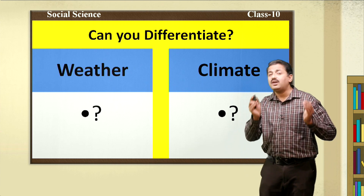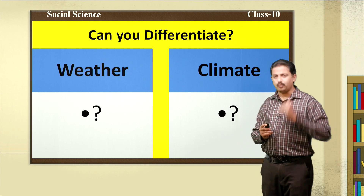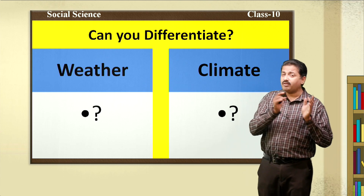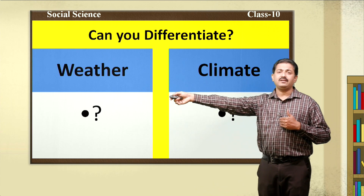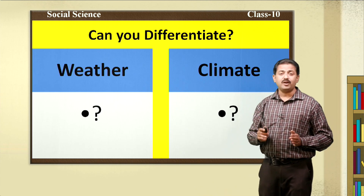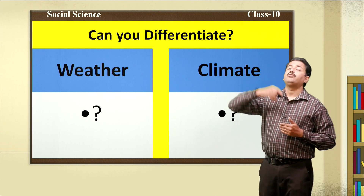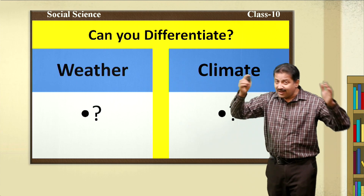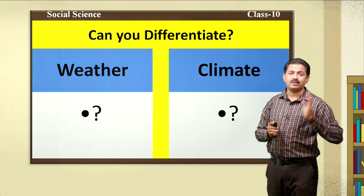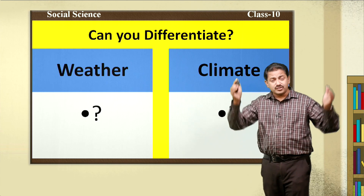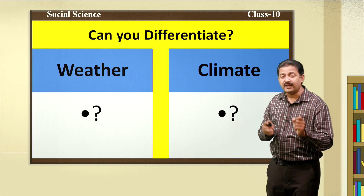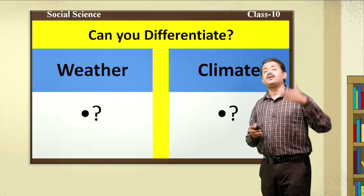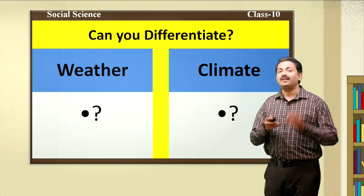Weather refers to short-term changes in temperature, rainfall and humidity. It changes from place to place. For example, in Bengaluru, the weather condition of one area may differ from a nearby area in the same place. But climate is not like that. Climate is an average weather condition of a vast area considered over 35 to 40 years. The average weather condition of a large area over 35 to 40 years is calculated and they name which type of climate it is.